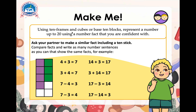You can use this concept to help you work out the following. We have 4 plus 3 equals 7, and 14 plus 3 equals 17. We also have 3 plus 4 equals 7, and 3 plus 14 equals 17. Now we have 7 minus 4 equals 3, and 17 minus 3 equals 14. We can also see that 7 minus 3 equals 4, and 17 minus 14 equals 3. You can try this out with any number.